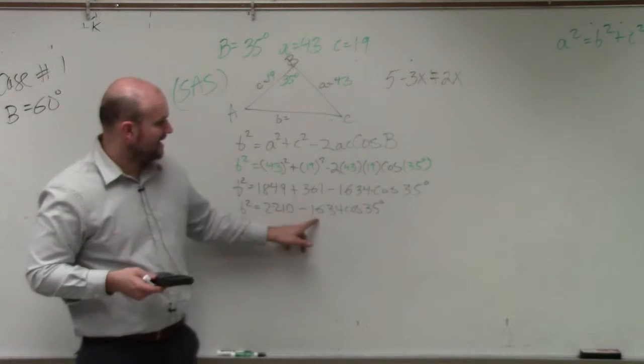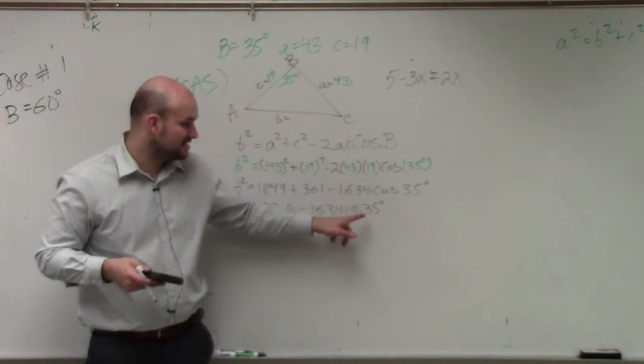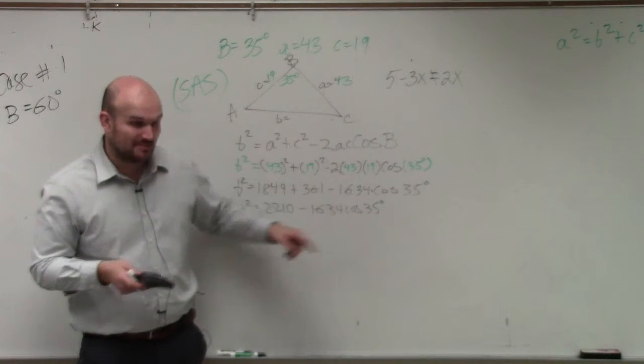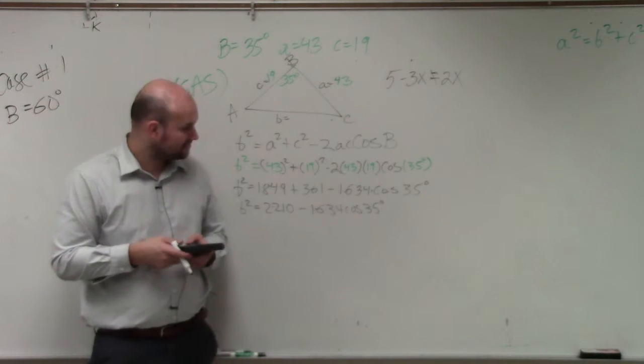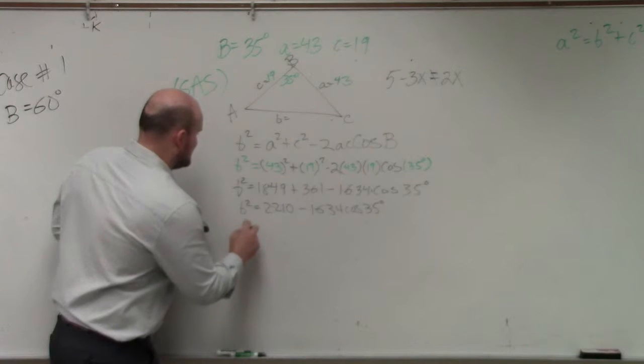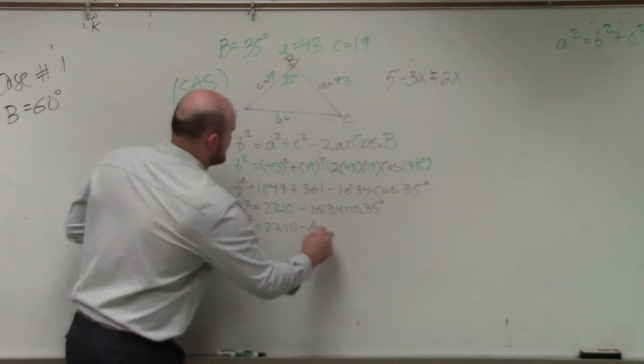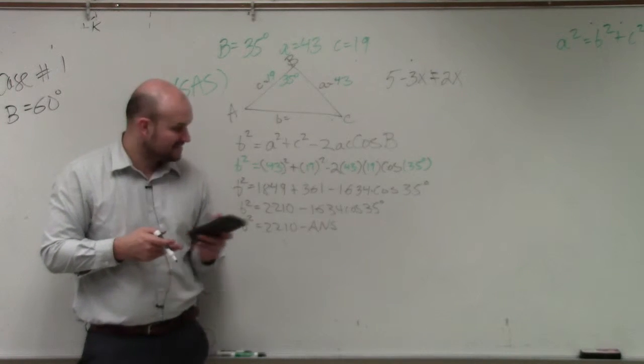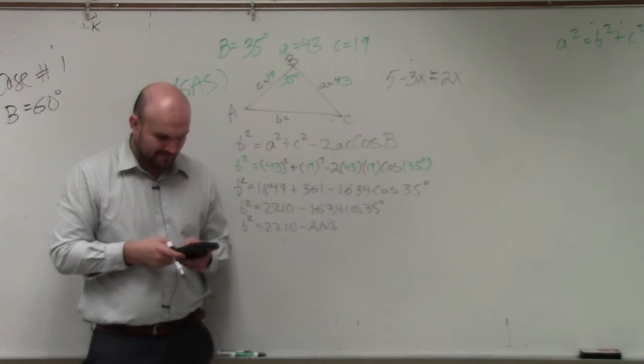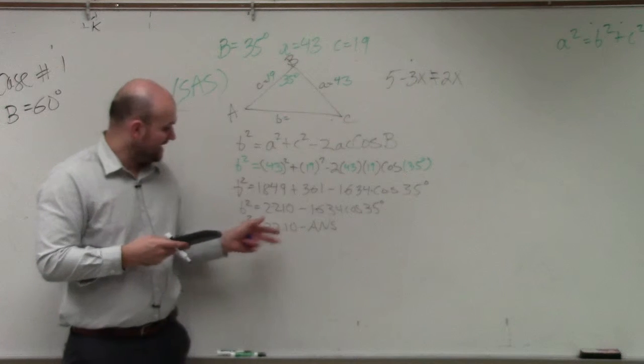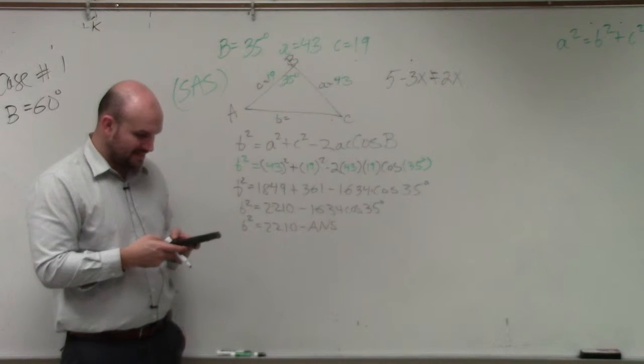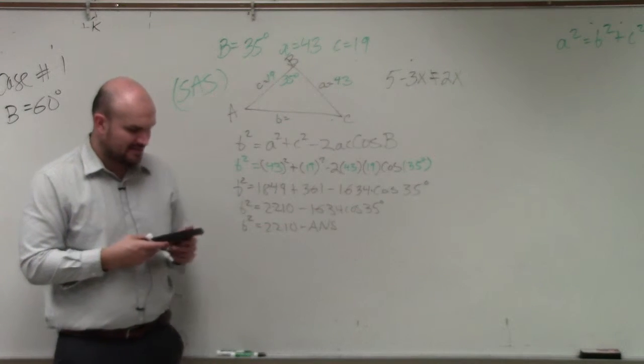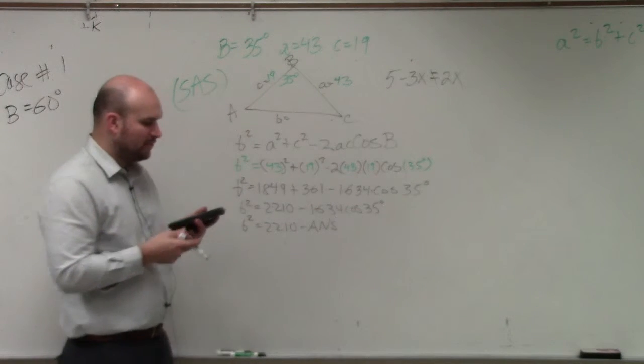What I do is I simplify this first and then I subtract it from that. Because remember, this is going to give you a decimal, an irrational decimal. So I do b squared equals 2210 minus your answer. So what I do is 1634 times the cosine of 35. Then I do 2210 minus my last answer, which is this, and I get 871.5.